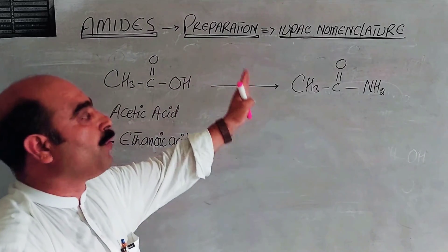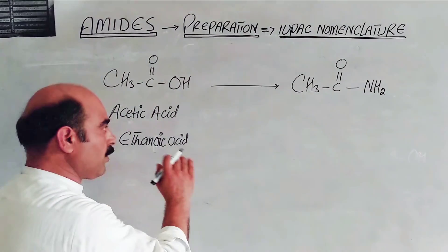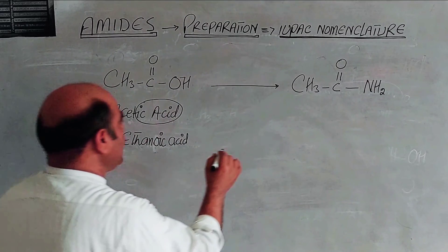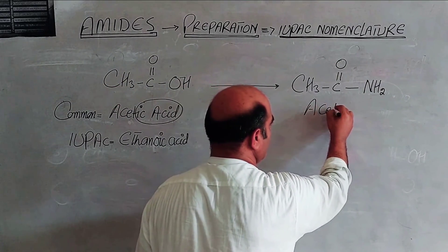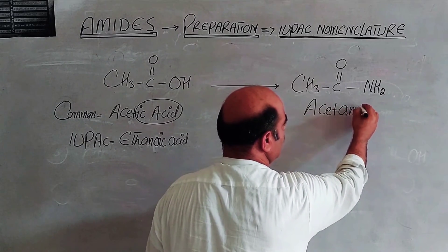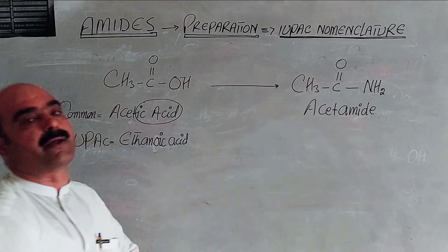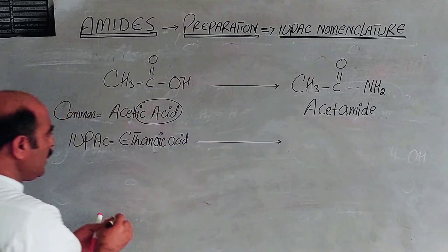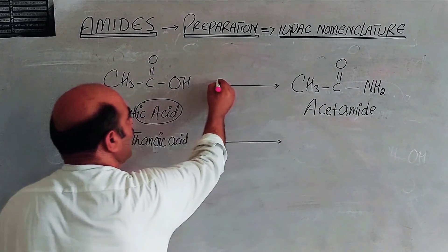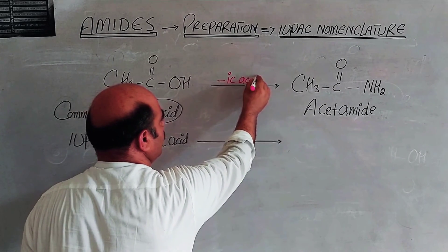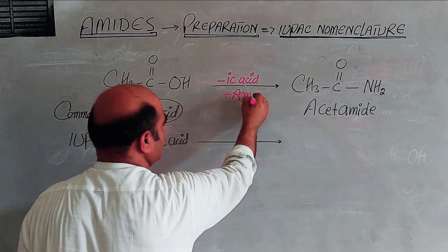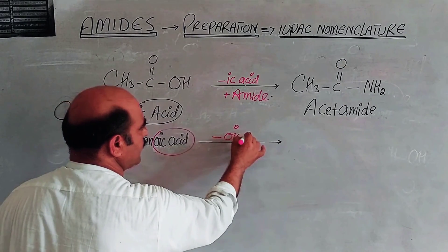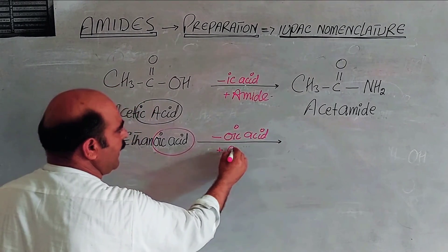The common name of the simplest amide uses the suffix '-amide.' The IUPAC name is formed by taking the parent carbon chain and replacing the '-oic acid' ending with '-amide.' The common names and IUPAC names both use the '-amide' suffix consistently.